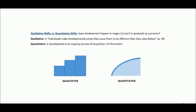Quantitative shifts, however, happen as an ongoing process of development and learning. Which means that there is no distinct stage, but development happens over a curve over time, constantly.